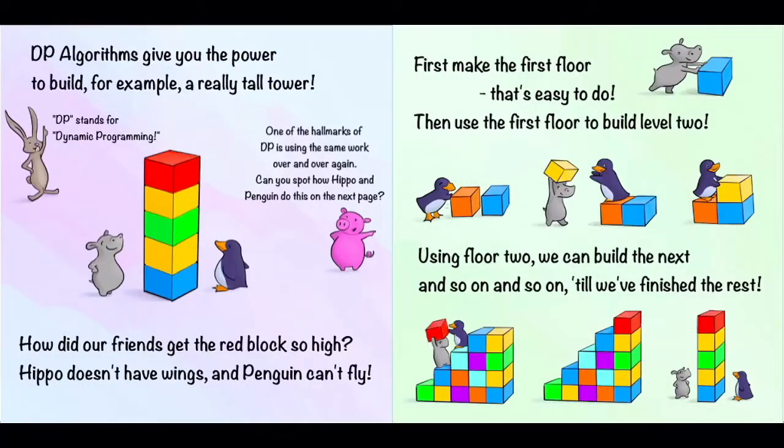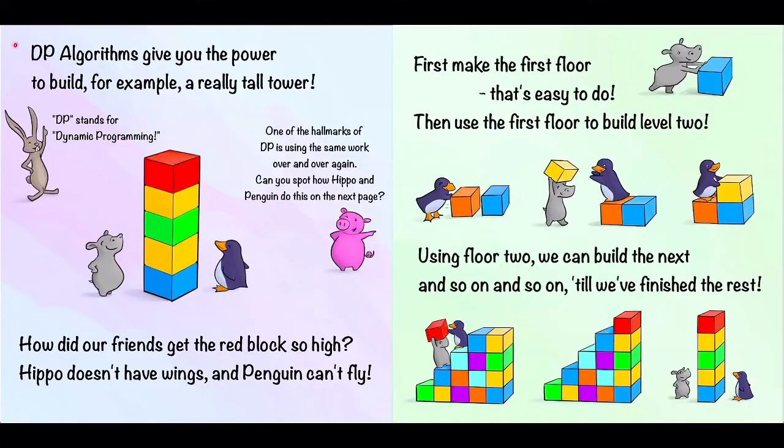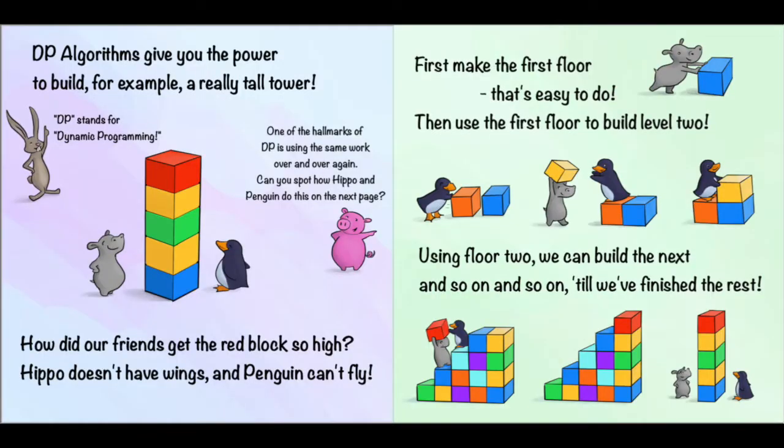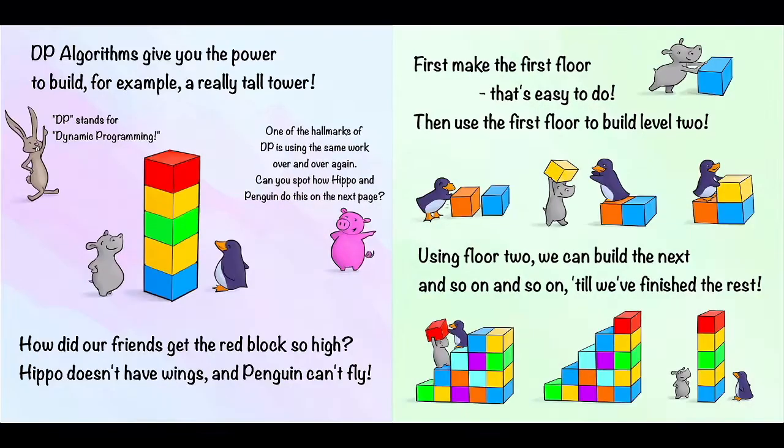Now we'll move on to our next sort of algorithm. DP algorithms give you the power to build, for example, a really tall tower. And Rabbit tells us that DP stands for dynamic programming. Here Hippo and Penguin have built this really tall tower out of blocks. How did our friends get the red block so high? Hippo doesn't have wings, and Penguin can't fly. To see how they use DP or dynamic programming. Pig tells us that one of the hallmarks of DP is using the same work over and over again. Can you spot how Hippo and Penguin do this on the next page?